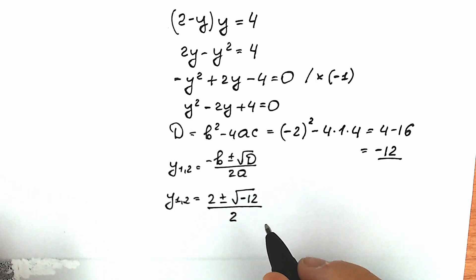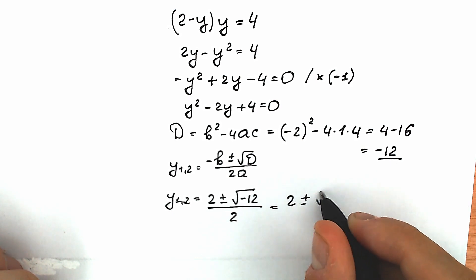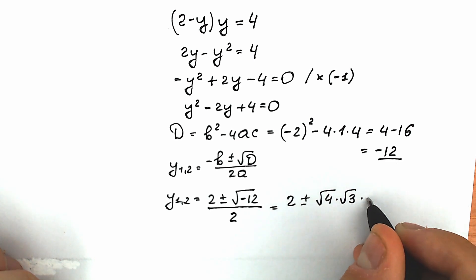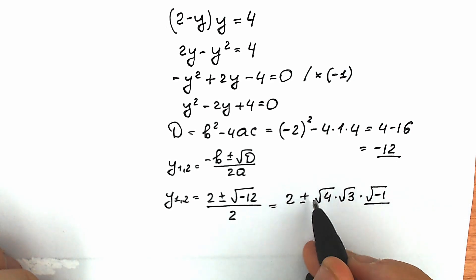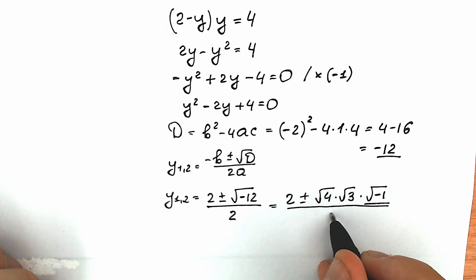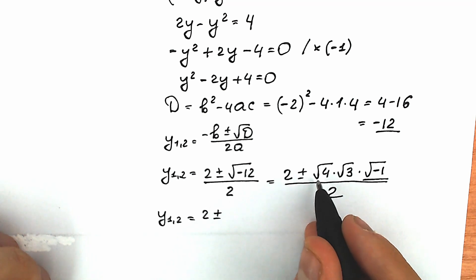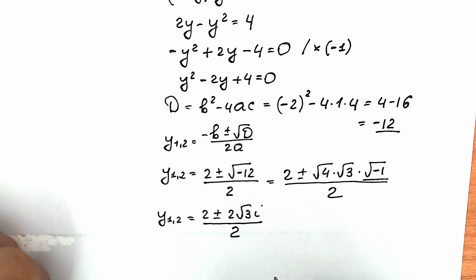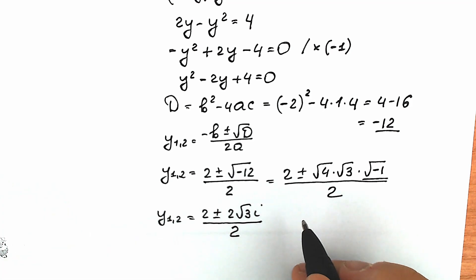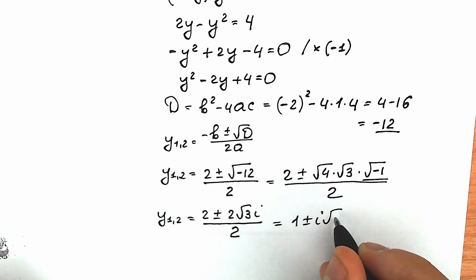Let's simplify. The square root of minus 12 can be written as square root of 4, times square root of 3, times square root of minus 1. And square root of minus 1 is our imaginary unit i. So we have 2 plus or minus 2 times square root of 3 times i, all over 2. Dividing numerator by 2 in parts, we get y₁ and y₂ equal to 1 plus or minus i square root of 3. These are our complex roots.